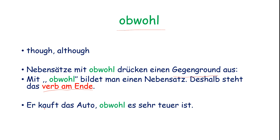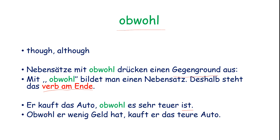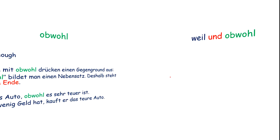Er kauft das Auto, obwohl er sehr teuer ist. He buys the car, though it is very costly. When the Nebensatz comes first: verb, comma, verb. There is a Nebensatz, there is a Hauptsatz.